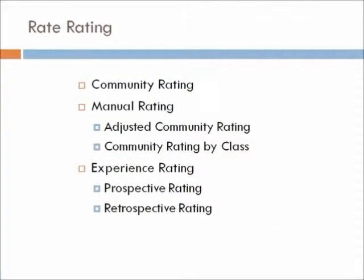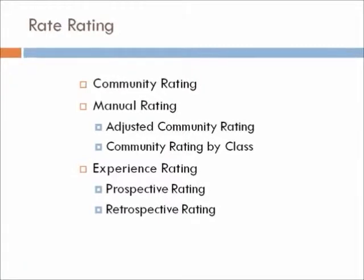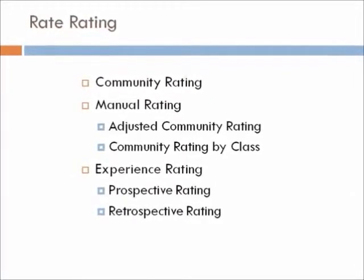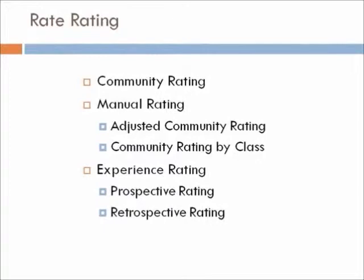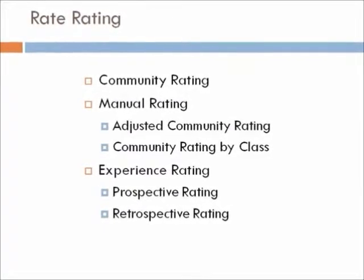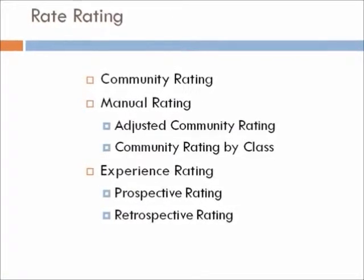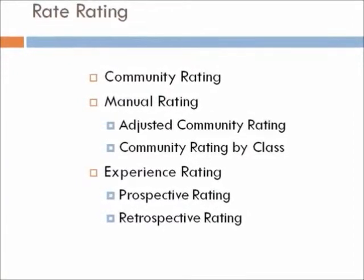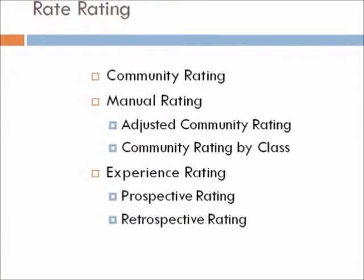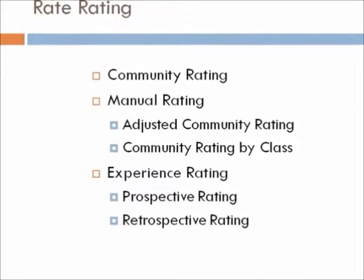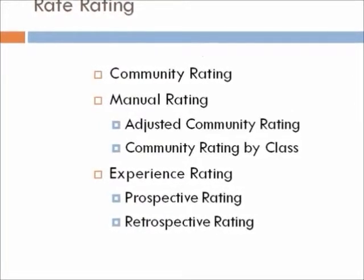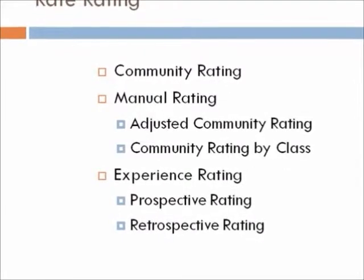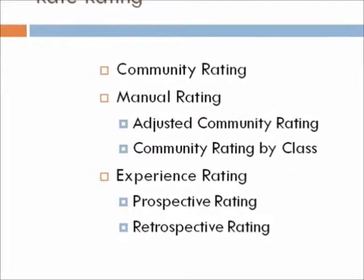The second key term is rate making. There are three important types of rating: community rating, manual rating, and experience rating. Under manual rating there are adjusted community rating and community rating by class. Experience rating has two subcategories: prospective rating and retrospective rating.